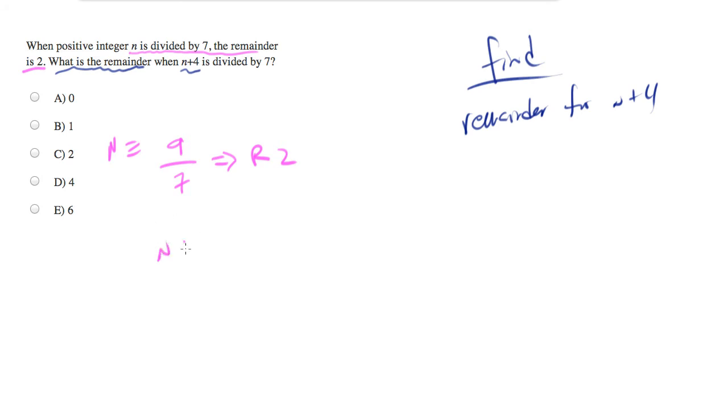Okay, so let's figure out what happens when n plus 4 is divided by 7. Well, n is 9. So 9 plus 4 divided by 7 is equal to 13. How many times does 7 go into 13? Once. And how much is left over? 6. So the answer is E.